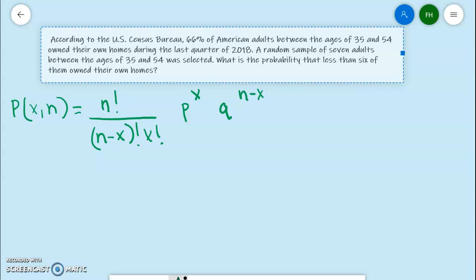First of all, we want to know less than six, so we would want to know the probability of X equaling 5, X equaling 4, X equaling 3, X equaling 2, X equaling 1, and X equaling 0. So we would have to plug every single one of those into this formula. We would basically have to work this formula six times and add those up.